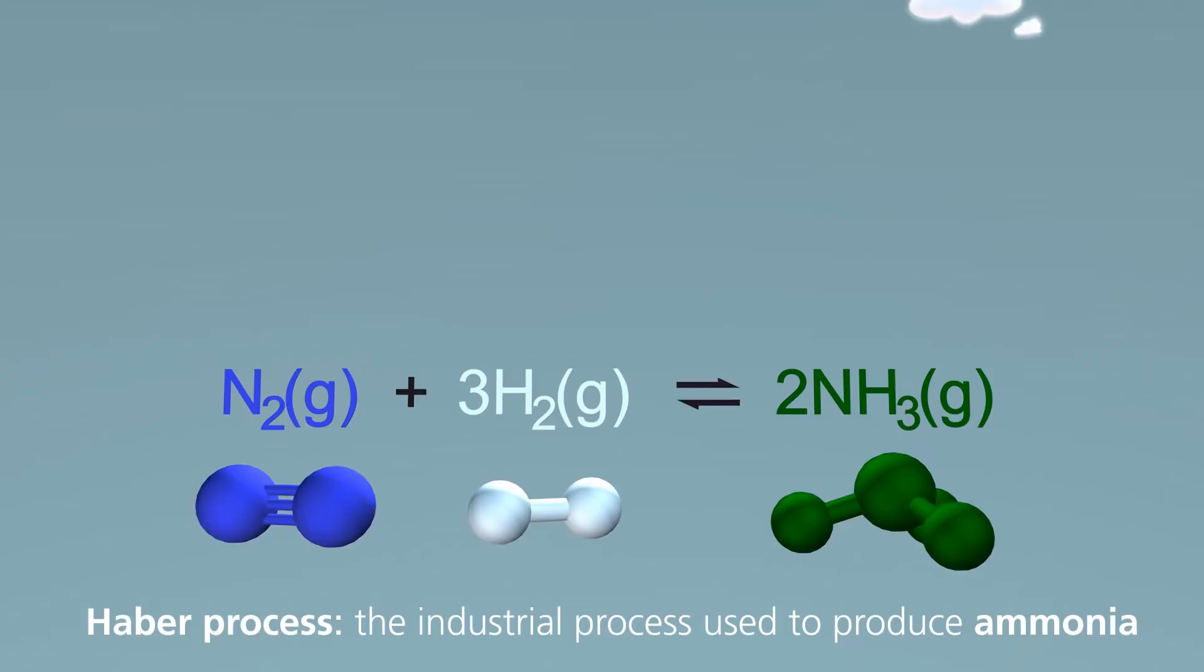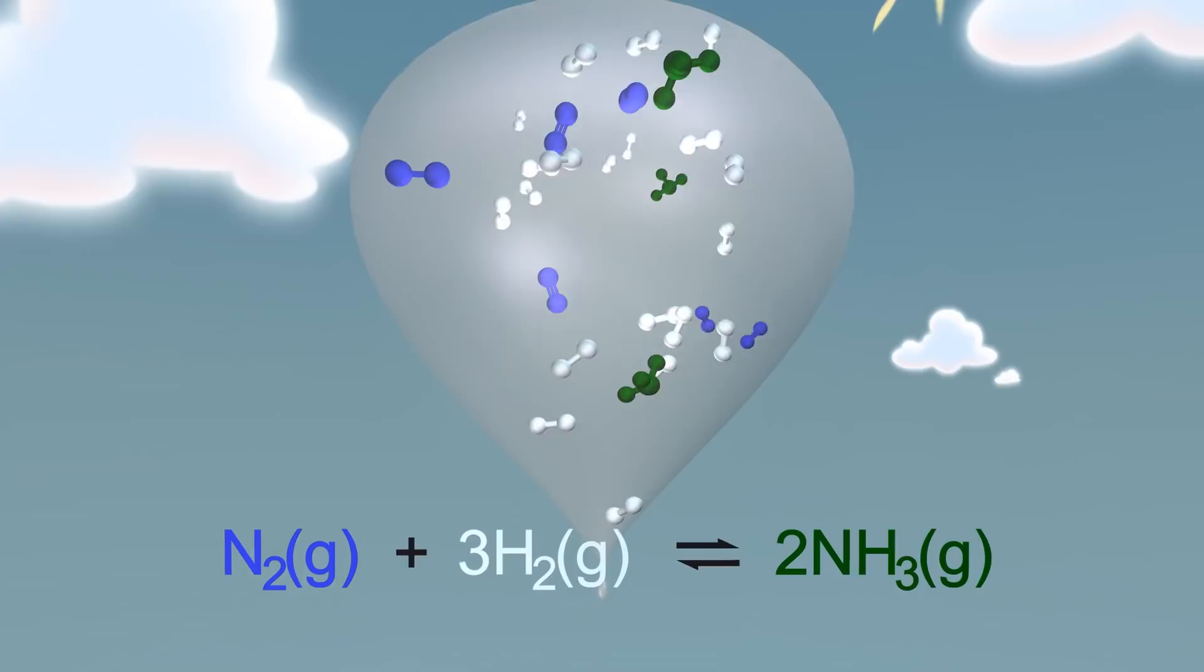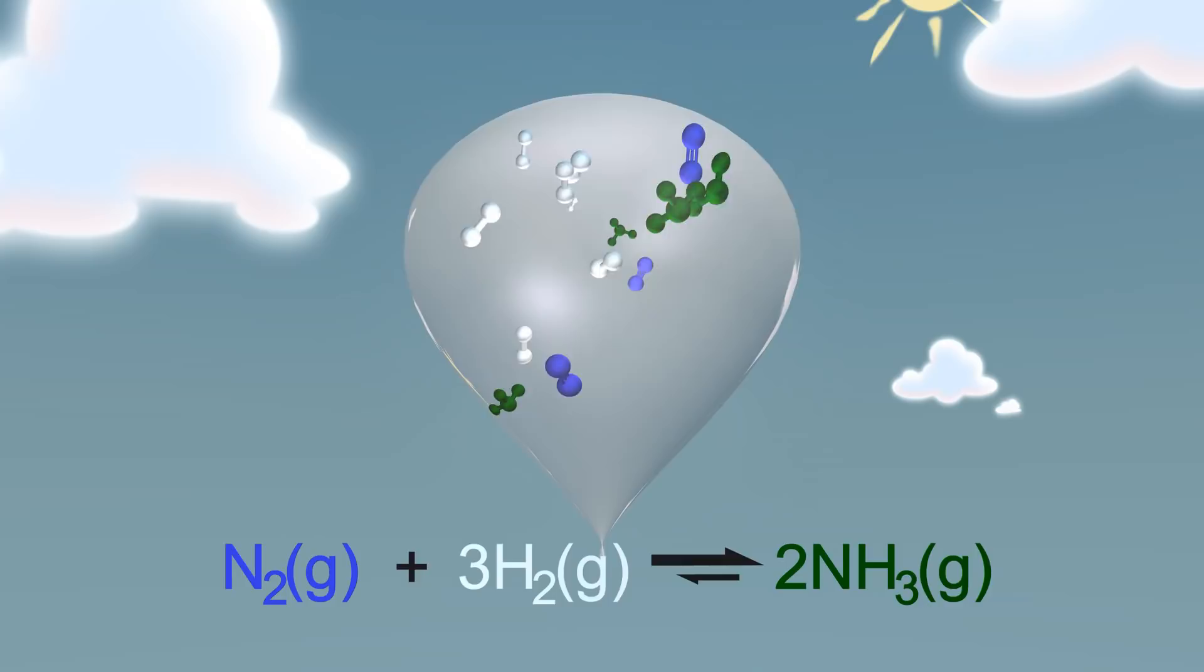Consider the Haber process in which nitrogen and hydrogen react to form ammonia. Le Chatelier's principle tells us that if the pressure on the system increases, the equilibrium position shifts to the side where there are fewer moles of gas and hence a lower pressure.